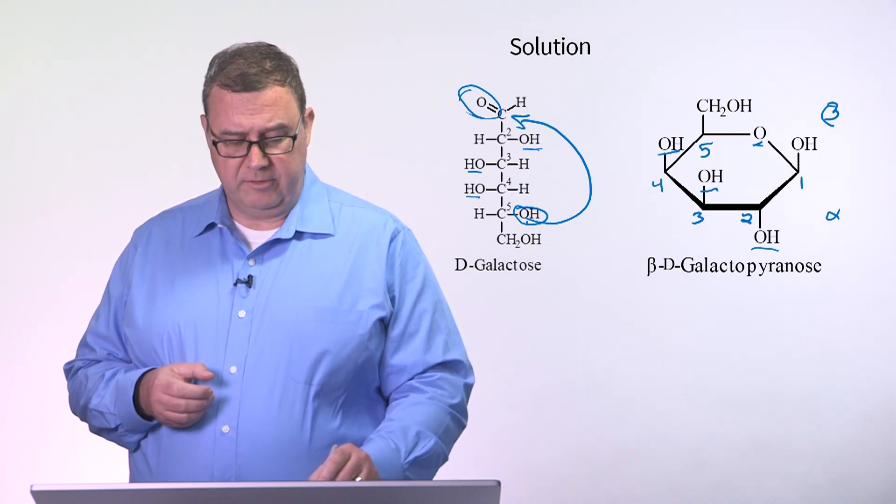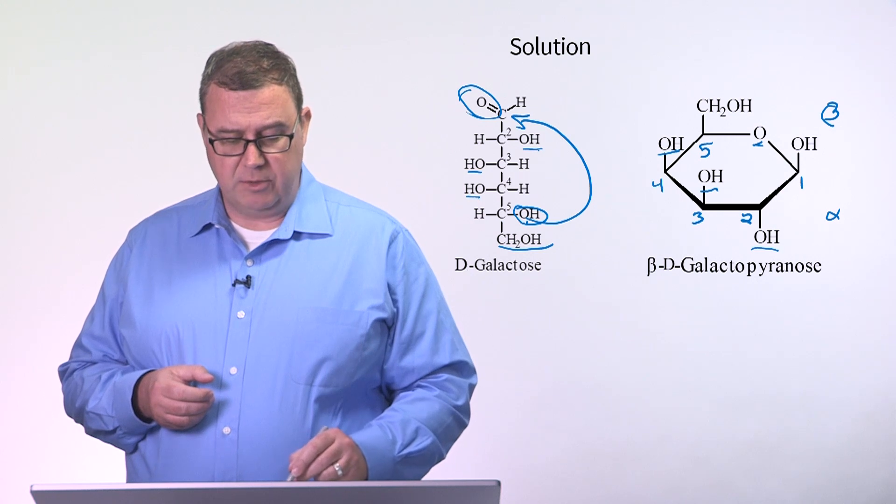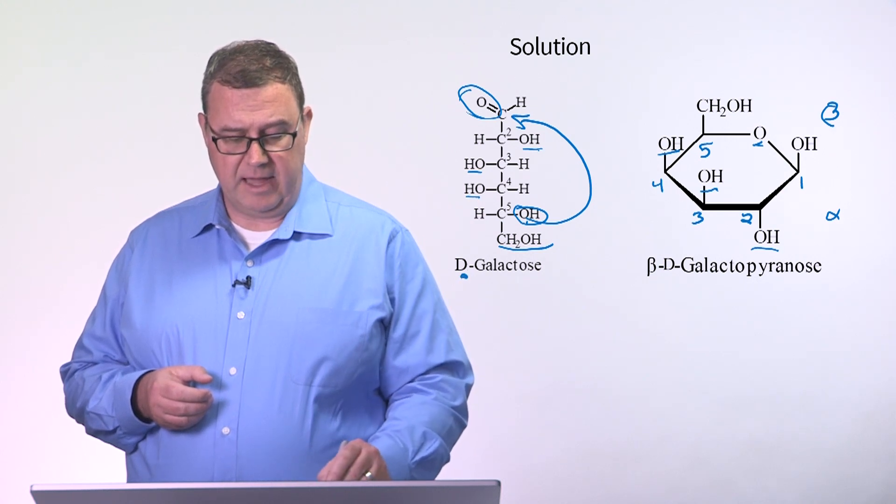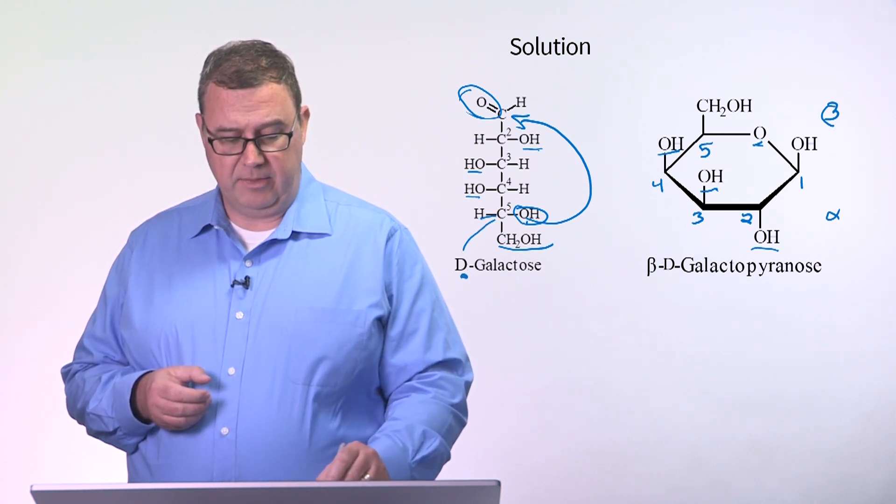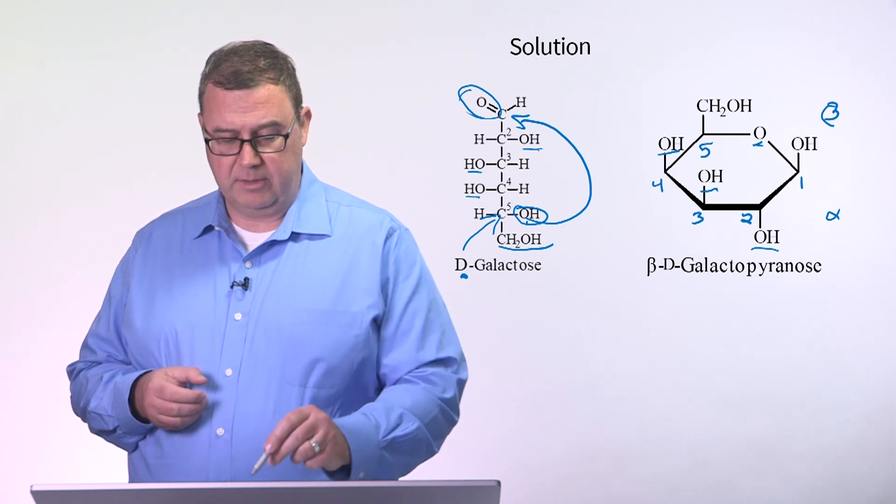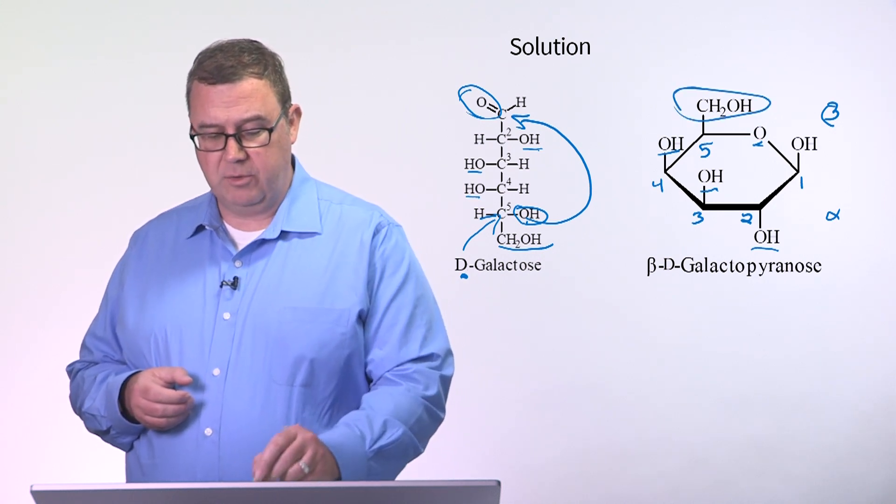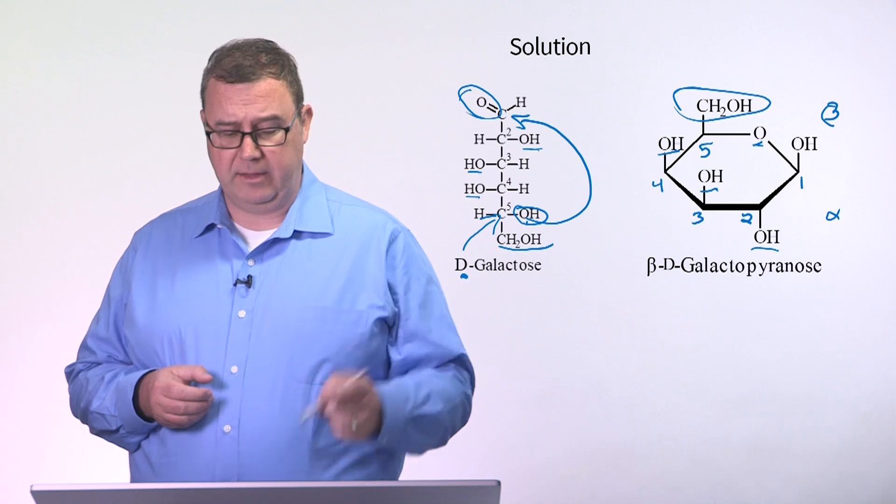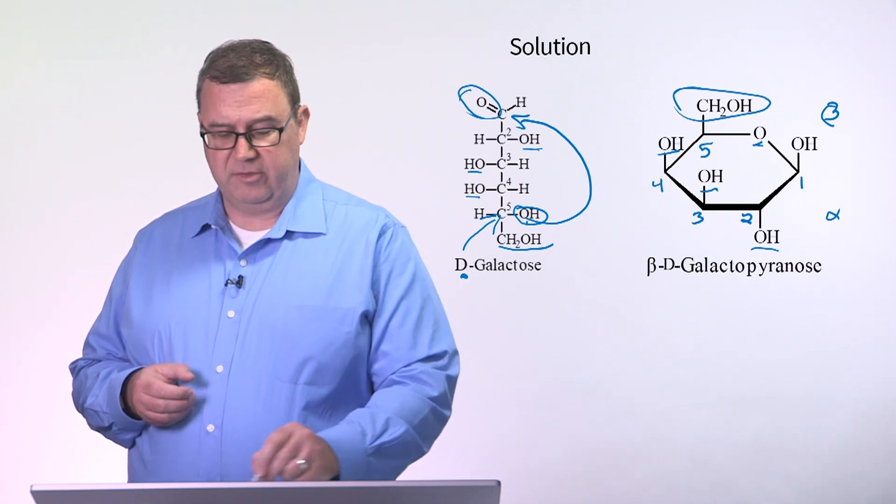The last thing we want to describe here is the position of this CH2OH group. Because this is D-galactose, as dictated by the penultimate carbon here, the five carbon, it's going to drive the CH2OH group to the top face of the ring when this OH forms this cyclic form.